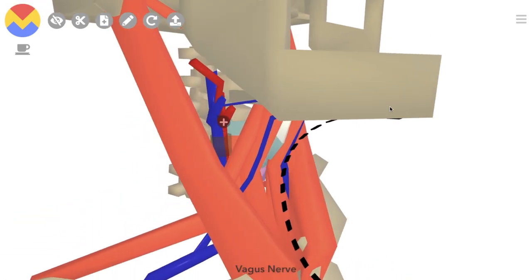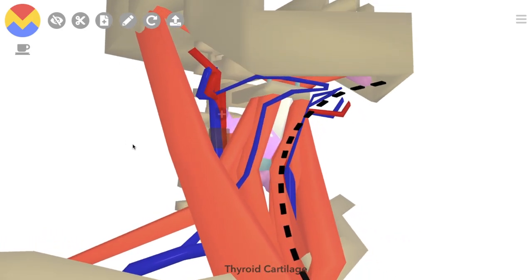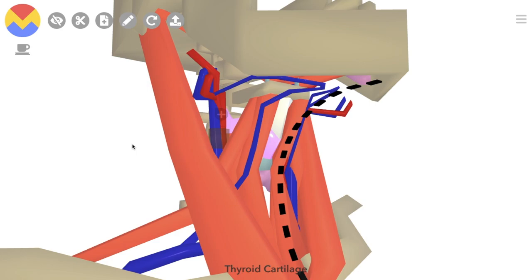You can feel your carotid pulse by placing your fingers just medial to the sternocleidomastoid at the level of the superior border of the thyroid cartilage. You'll be placing your fingers on the carotid triangle.